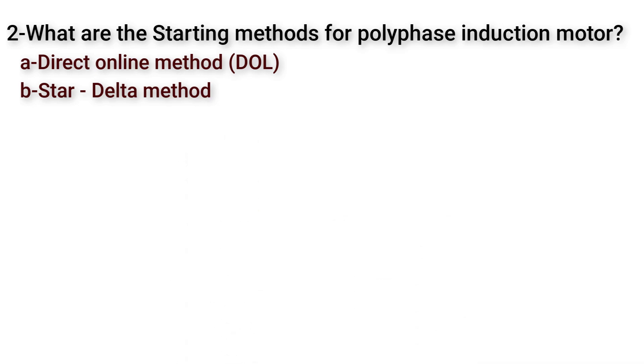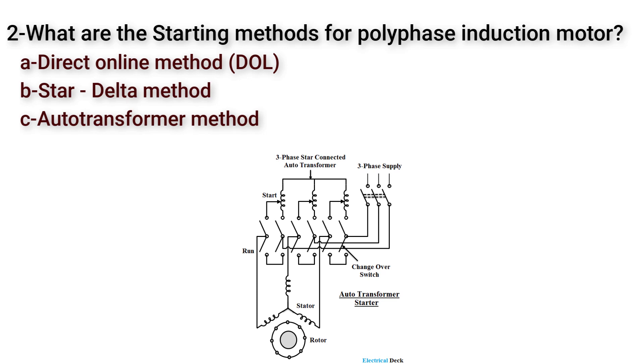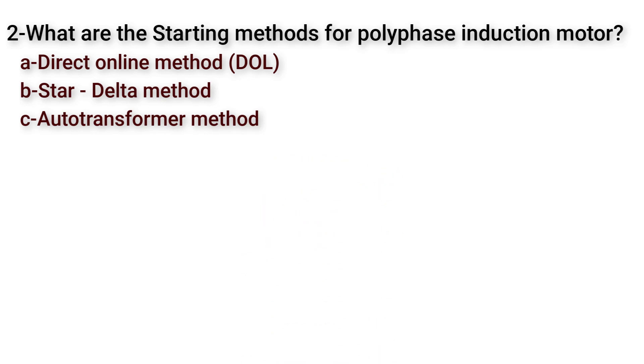The third method is auto transformer. This is an old method. We use here a single winding transformer which acts as primary and secondary winding at the same time. Here the auto transformer reduces the voltage applied on the motor at starting. Then the auto transformer will be disconnected when the motor reaches its rated speed.